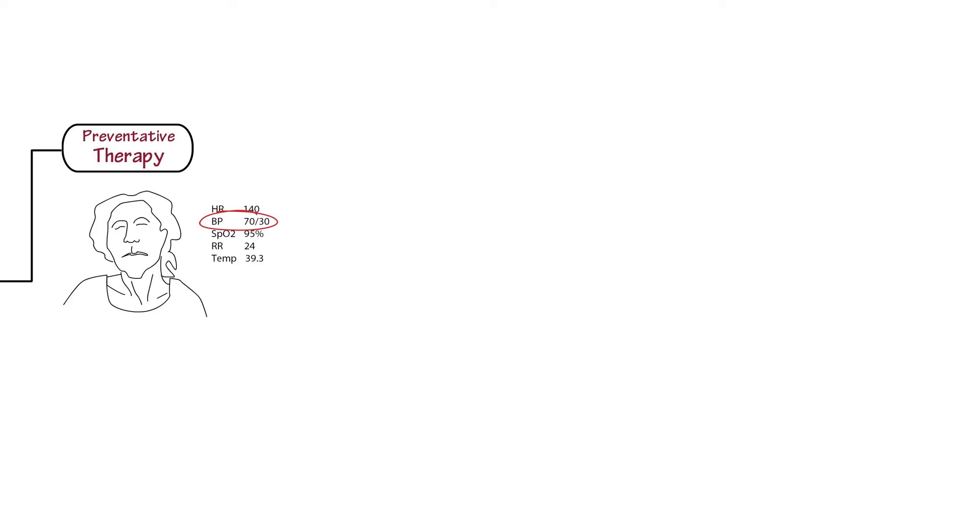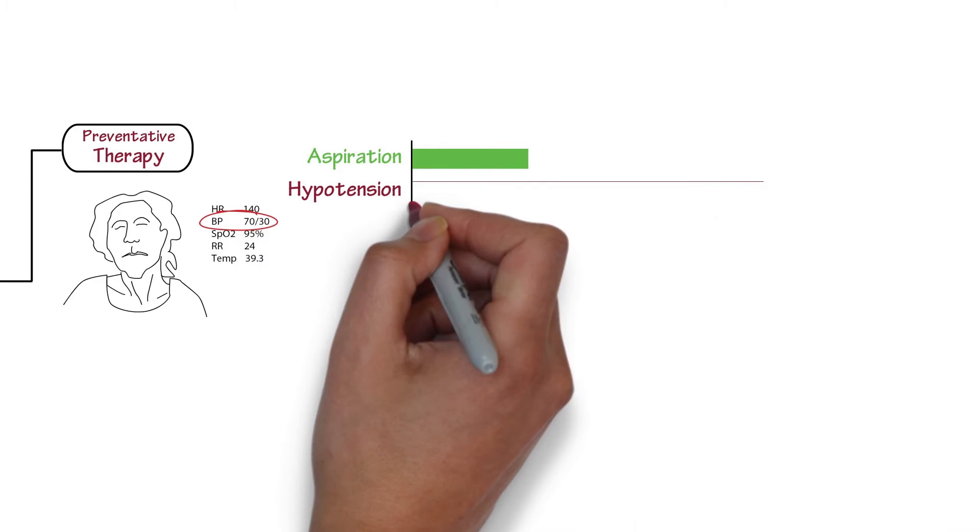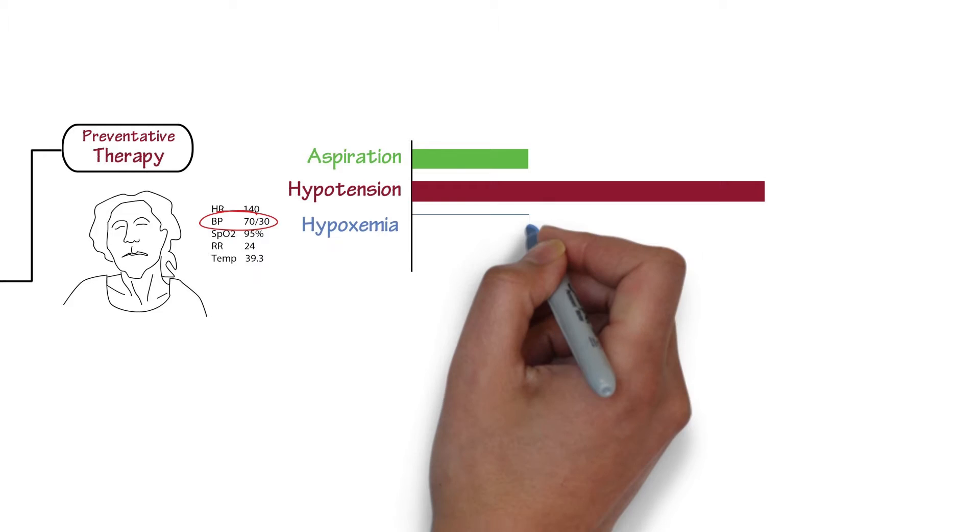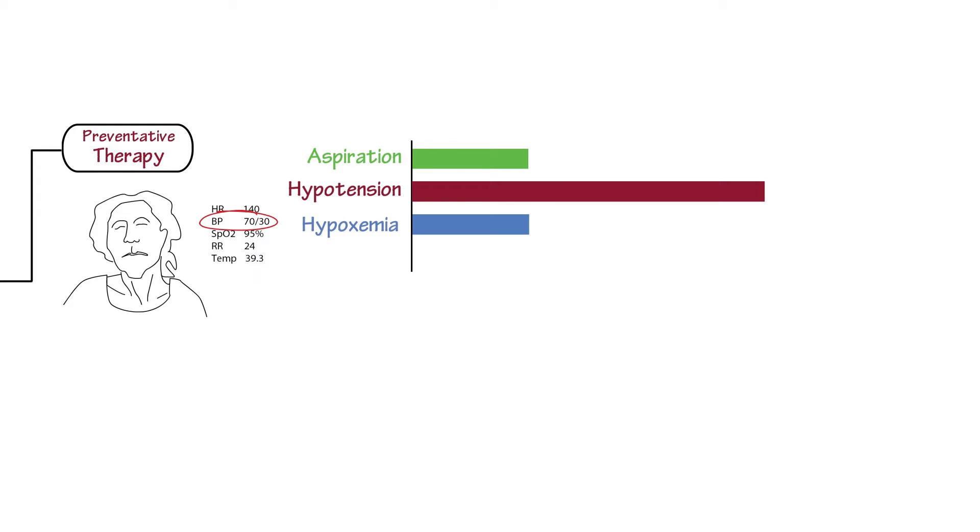IV access, cultures, antibiotics, fluids take first priority. You try your best to normalize the vital signs, especially hypotension. When it comes to intubation itself, we again weigh the risk and consider how to modify them. The biggest risk here is hypotension. The change from negative pressure to positive pressure ventilation, as well as the circulatory depressant activity of sedatives, can put the patient's hemodynamics in a nosedive.